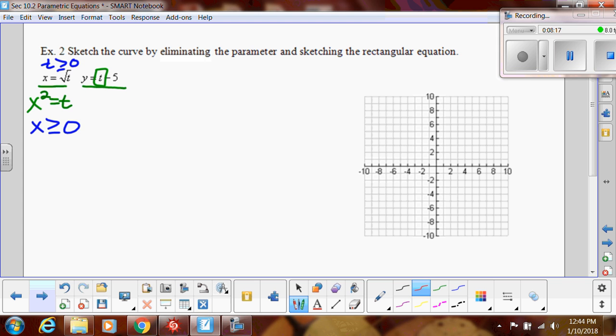So if I plug this in, I'm going to get y equals x squared minus five. So we know that's just a parabola that shifted down. So let's start at negative five and then go from there. So since x has to be greater than zero, I'm not going to do the left half of the parabola. It's just going to go like that.